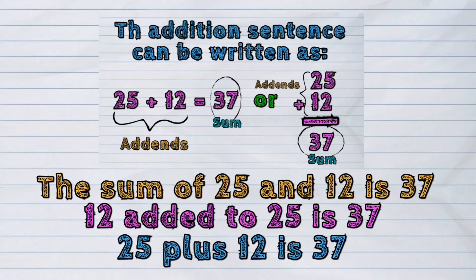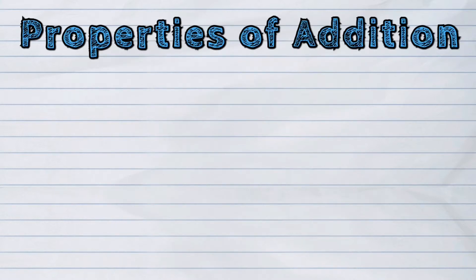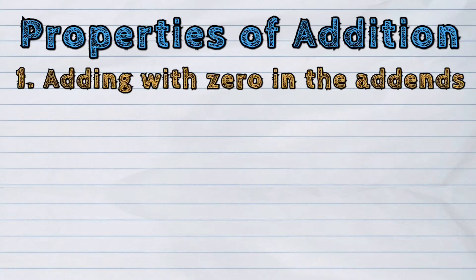Now, let us identify the different properties of addition. The first one is about adding with zero in the addends. Let us study these examples. 29 plus zero is 29.